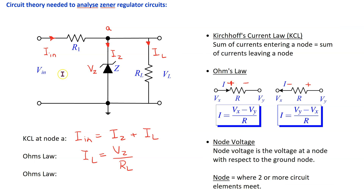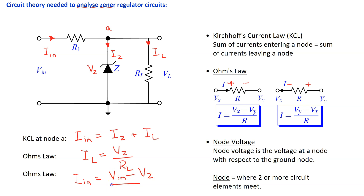Applying Ohm's law to resistor R1: the voltage at one side is VIN and at the other side is VZ due to the Zener diode, so VL = VZ. Therefore IIN = (VIN − VZ) / R1. These three equations from circuit theory are needed to analyze Zener regulator circuits.